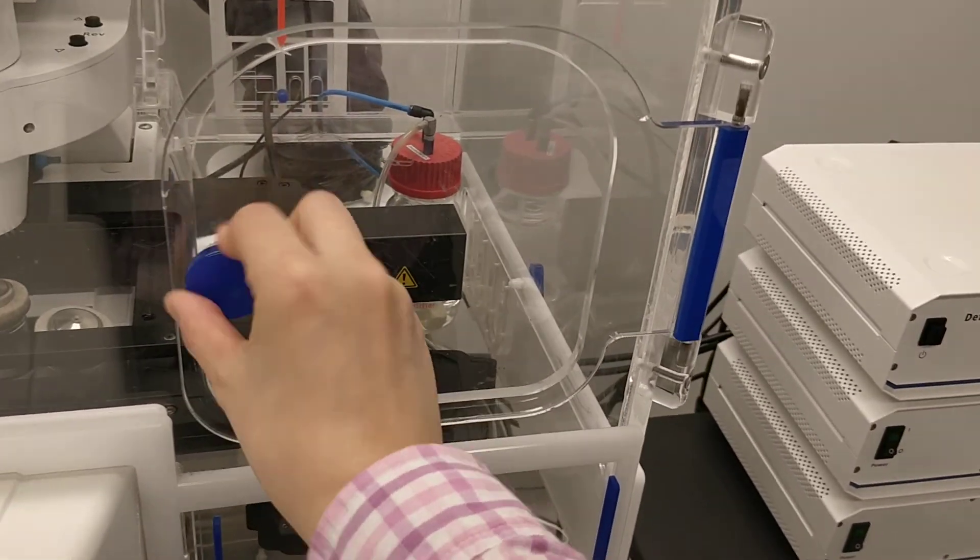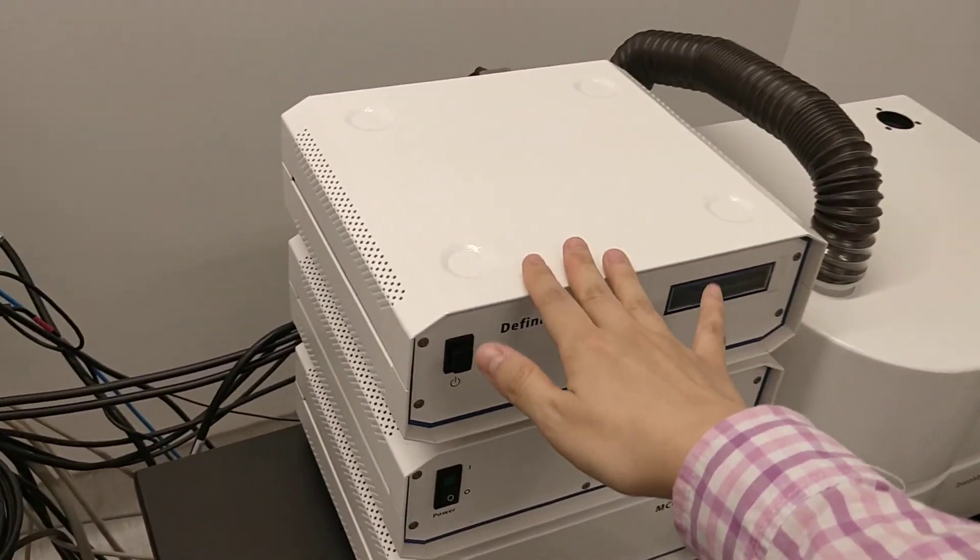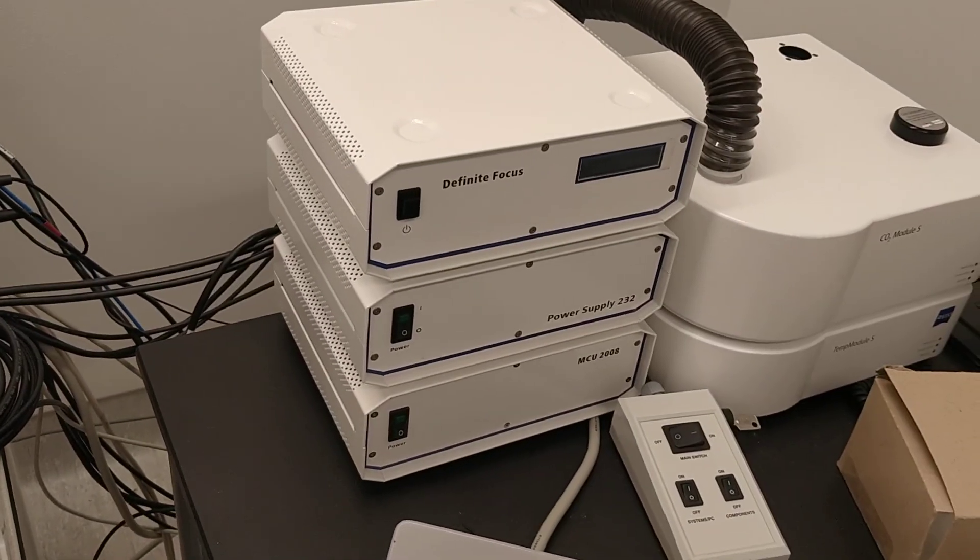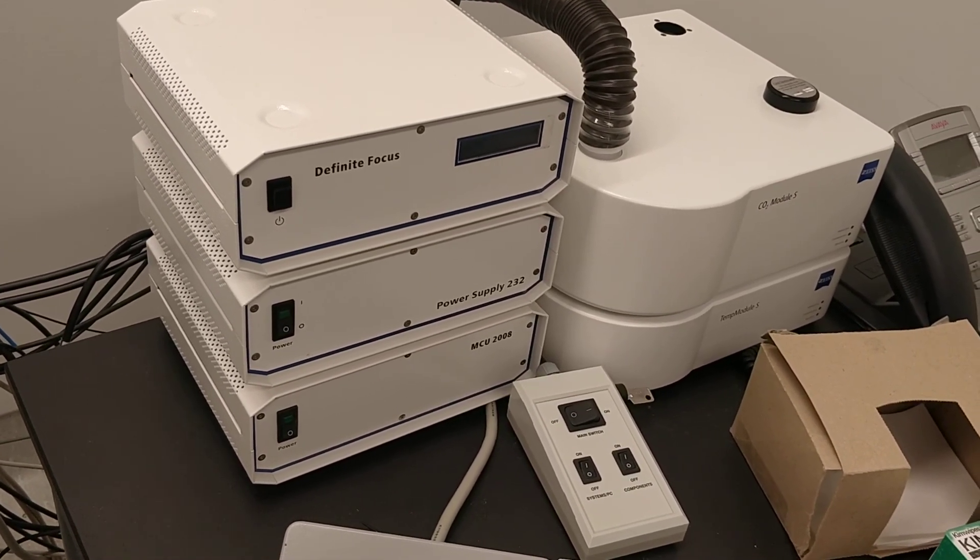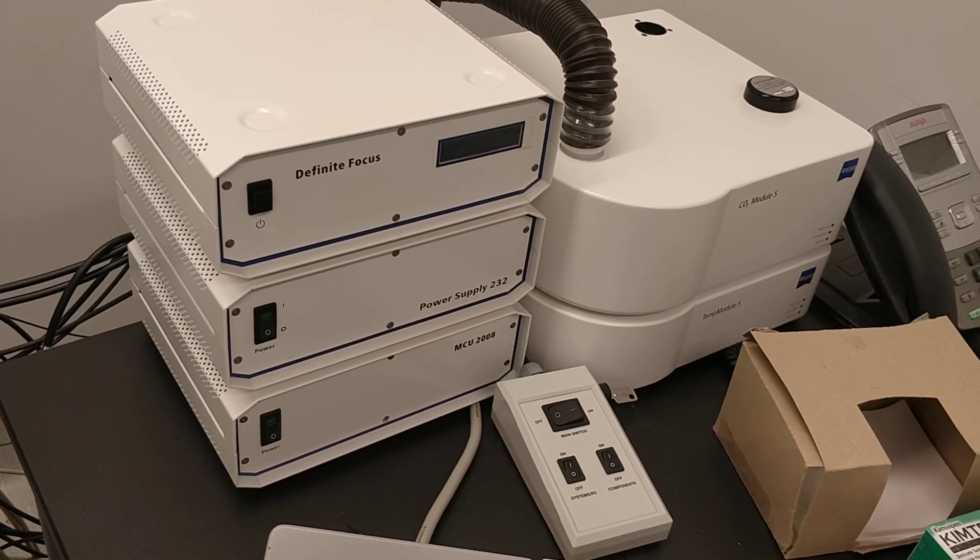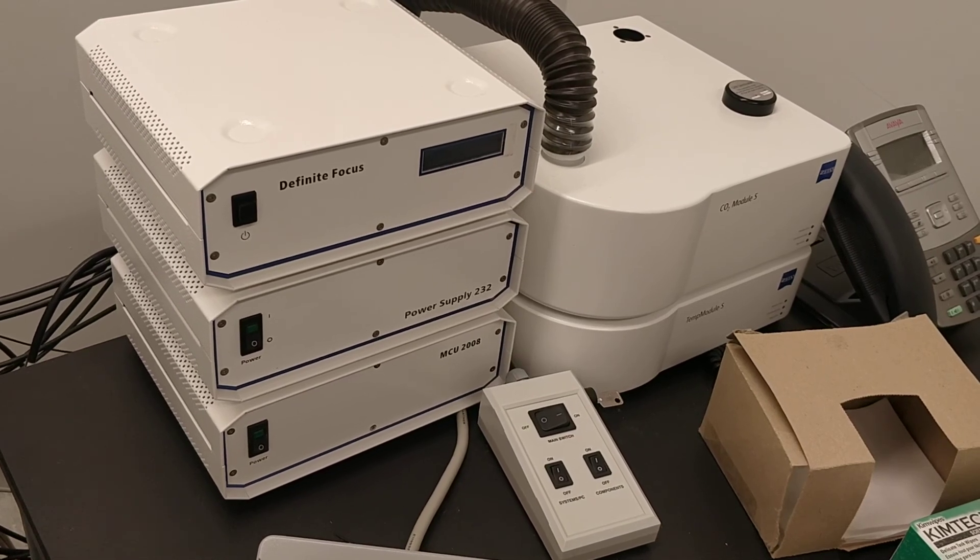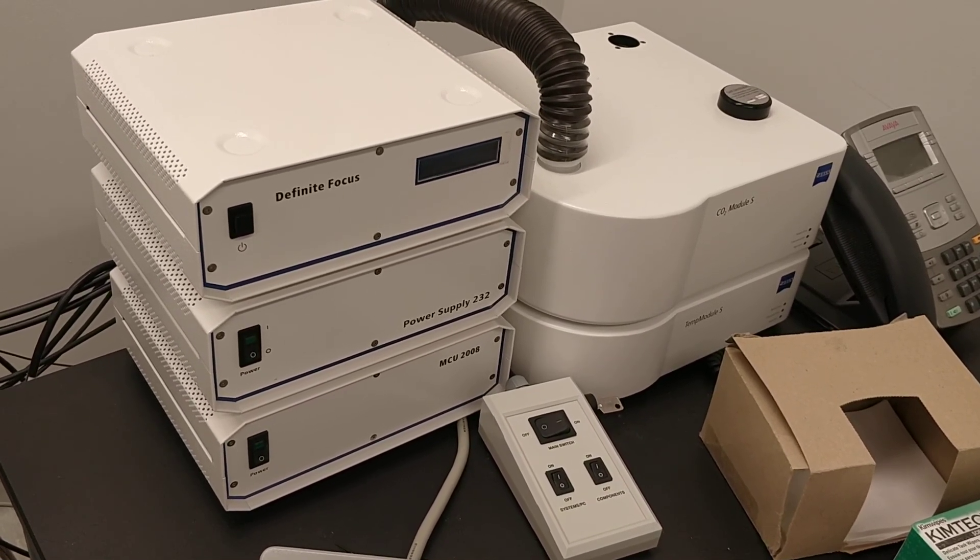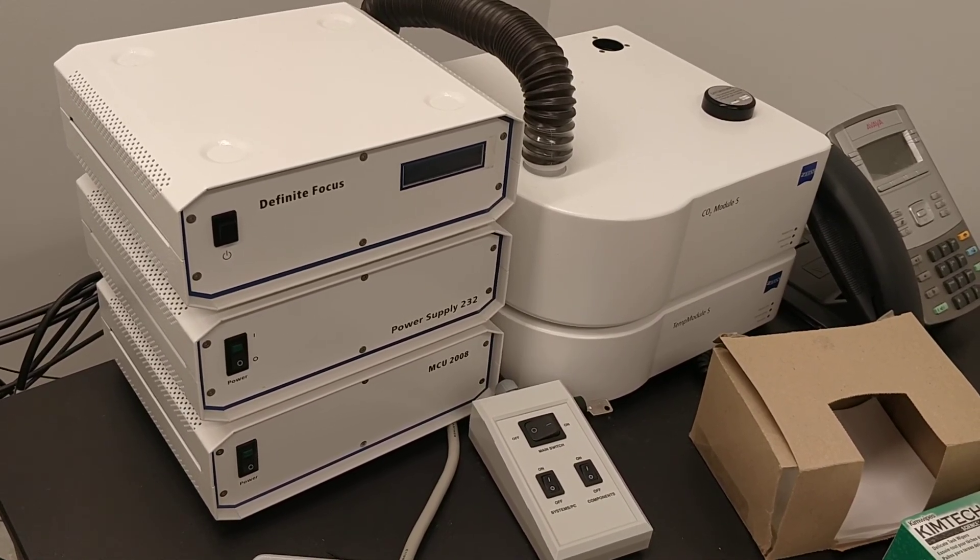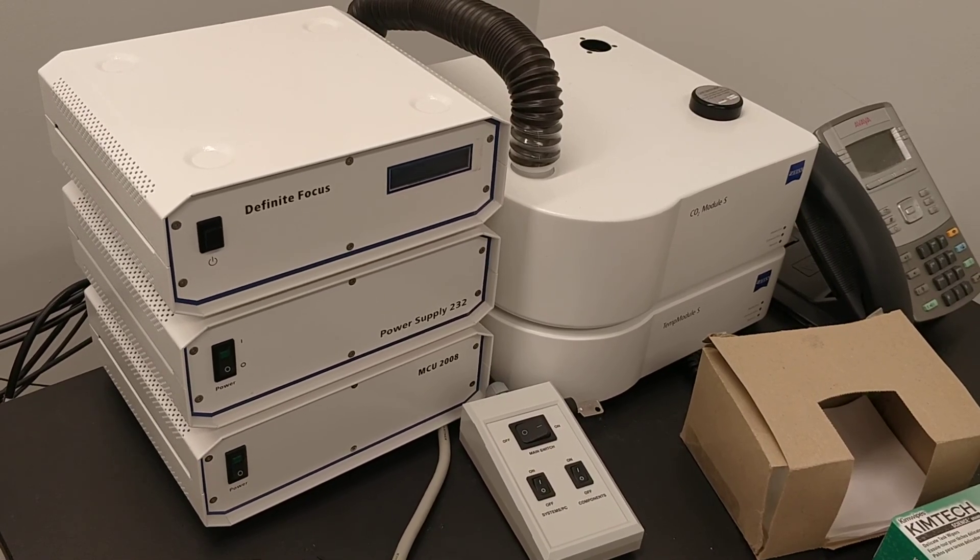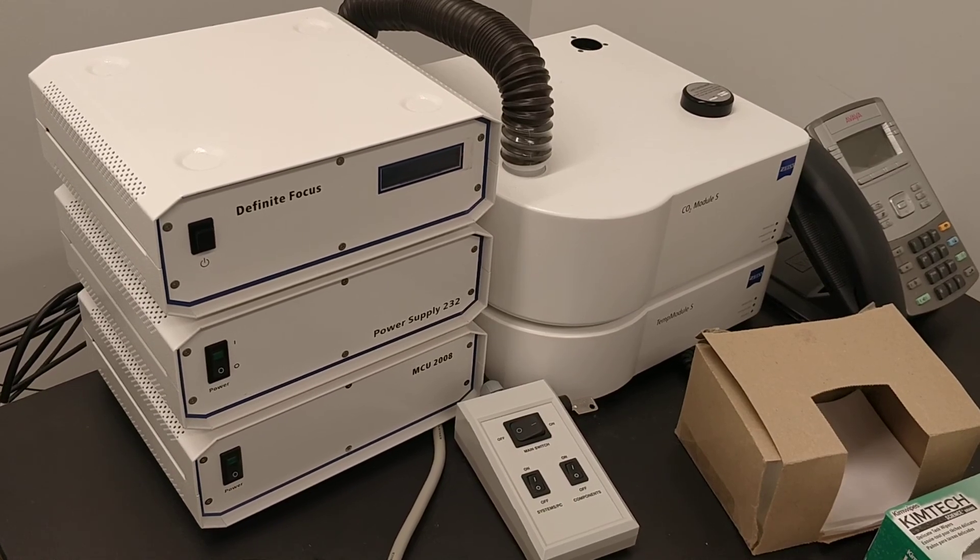So over here, we have the definite focus. So this one is to do automatic focusing. This is usually used for live sample. We do tend to recommend to do a Z-stack for live sample. But if you are measuring very fast, then definite focus is one way to go. You will have the risk of missing a few time points just because this is automatic and it's not obviously as reliable as if we take all the Z positions and choose from one of them. But this is an option for you.